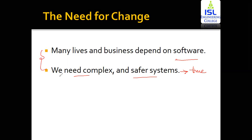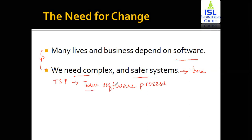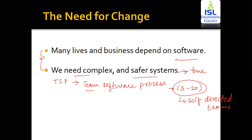These requirements can be fulfilled by TSP — Team Software Process. As the name suggests, TSP involves multiple members within a project team, ranging from three to twenty members. This team process model ensures the software being developed is the best quality software, because these are self-directed teams. Self-directed teams do not need a leader telling them what to do — they form the requirements, plan the schedule, identify risks, and remove them. Everything is managed by the team itself.